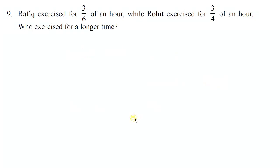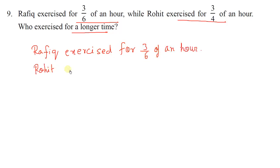Next question. Question number 9: Rafik exercised for 3 upon 6 of an hour, while Rohit exercised for 3 upon 4 of an hour. Who exercised for a longer time? In this question, Rafik is exercising for 3 upon 6 of an hour, while Rohit is exercising for 3 upon 4 of an hour. We need to find who is exercising more. We'll write the statement: Rafik exercised for 3 upon 6 of an hour. Rohit exercised for 3 upon 4 of an hour.